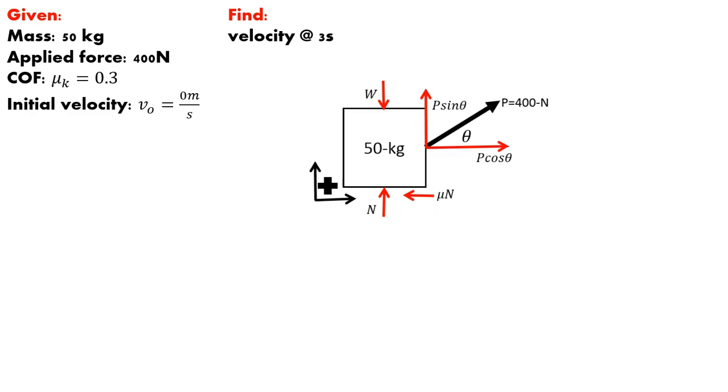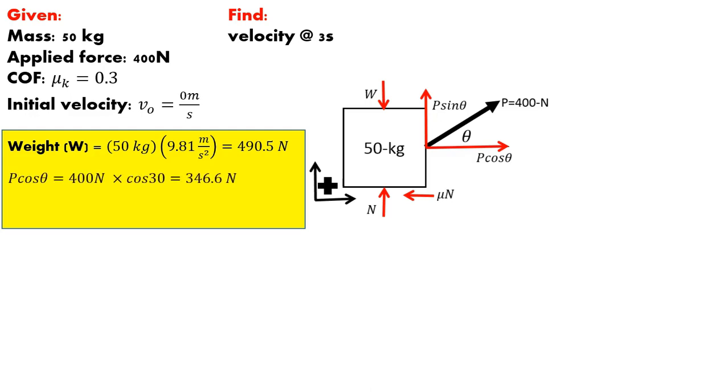Now, since we're going to start solving this problem, let's start addressing some of the forces that we can get right off the bat. Now we know the mass, and we're going to assume gravity is 9.81 meters per second squared. So that means we can start looking at things like the weight. We also know an angle and an applied force, so we can start looking at those horizontal and vertical components of that force. So the weight is 490.5 Newtons, that's just the mass of that crate times the acceleration due to gravity. We know the horizontal component, just the applied force times the cosine of 30, which is 346.6 Newtons. And the vertical component, which is the applied force times the sine of 30, which gives us 200 Newtons.